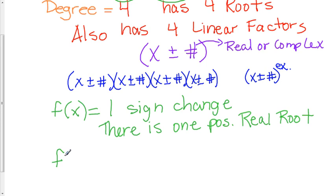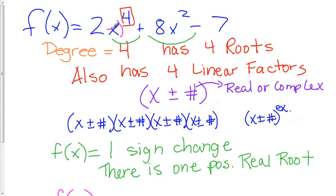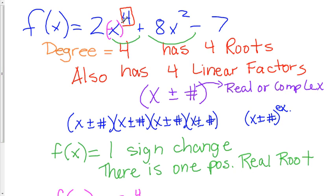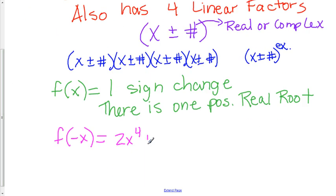We also know that if we substitute a negative x in, we put a negative x in here. That's going to stay the same as 2x to the fourth because a negative to the fourth is still positive. If you substitute a negative x in here, that is going to go to a positive x squared times 8 is still plus 8x squared.